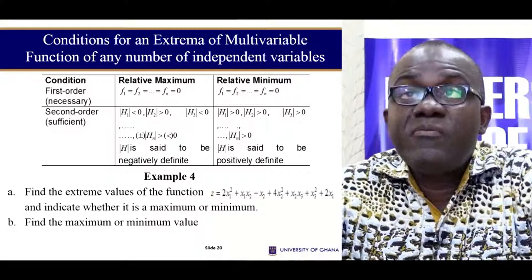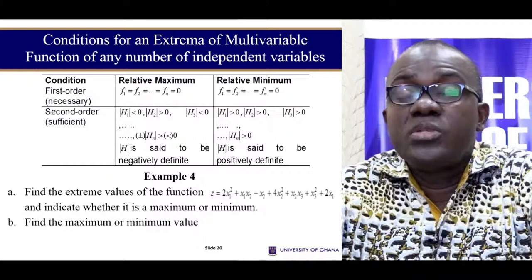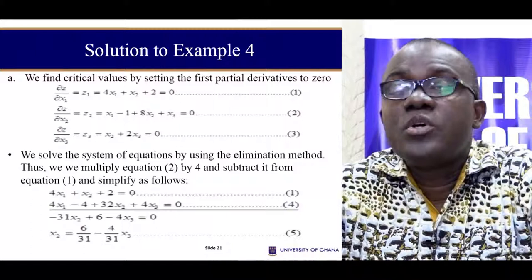The simple value addition with the Hessian is that it permits you to find the maximum or the minimum of any function with any number of variables, unlike the simple formula used at level 200.